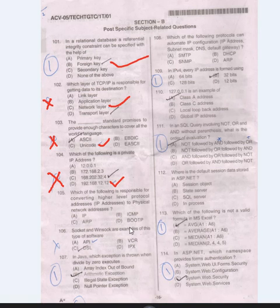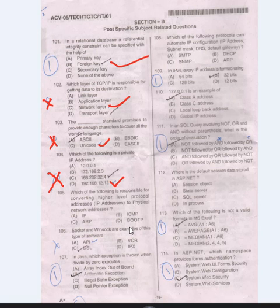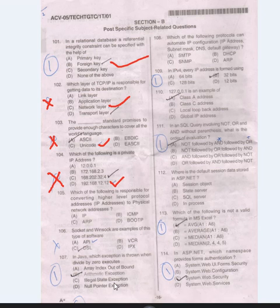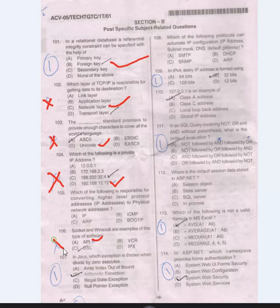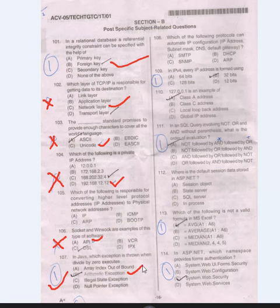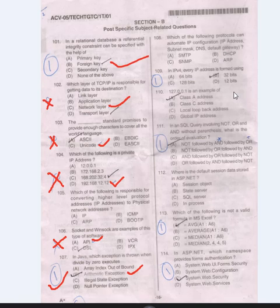Question 105: Which of the following is responsible for converting higher-level protocol addresses (IP addresses) to physical network addresses? This will be discussed later. Question 106: Socket and Winsock are examples of this type of software — that is API. Question 107: In Java, which exception is thrown when divided by zero executes? That is ArithmeticException. Question 108: Which of the following protocols can automate IP configuration? This will be discussed later.